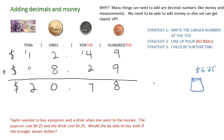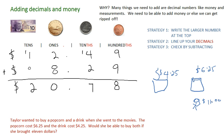And she bought a drink — the drink cost, look at that straw, four dollars and twenty-five cents. It's like a squiggly straw. Would she be able to buy both if she brought eleven dollars? So here's Taylor, and she brought eleven dollars. Pretty good picture of Taylor there.